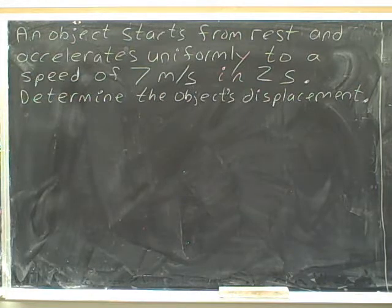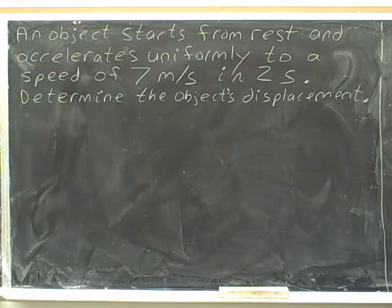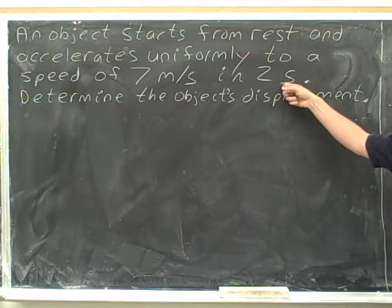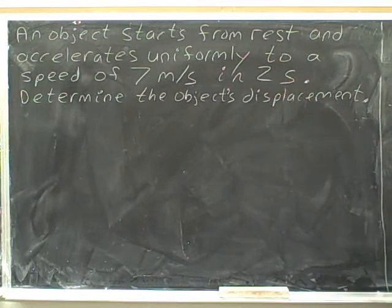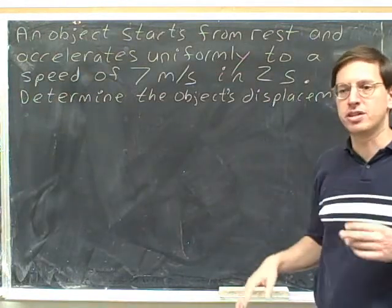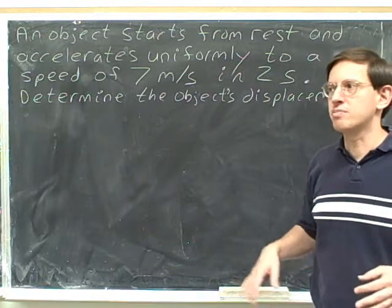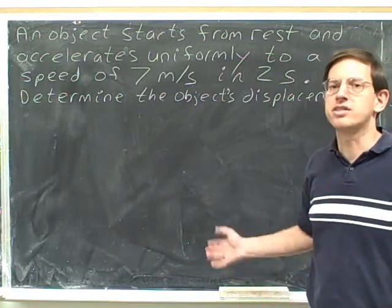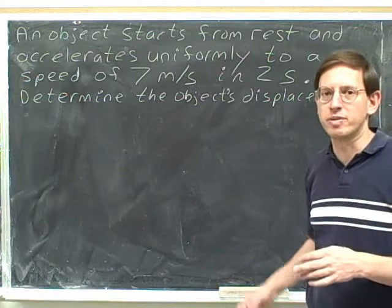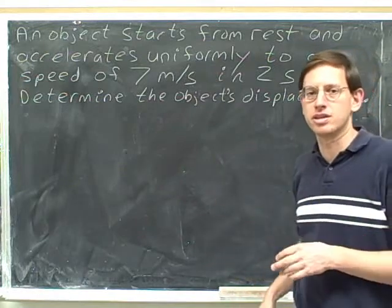An object starts from rest and accelerates uniformly to a speed of seven meters per second in two seconds — that 'S' is seconds, two seconds. Determine the object's displacement. Please carefully and accurately copy this problem into your notes and then systematically use our systematic approach and notation for solving this problem. Now is a good time to pause the video and do those tasks.